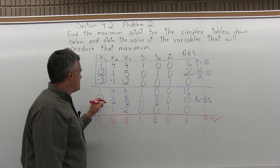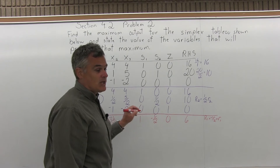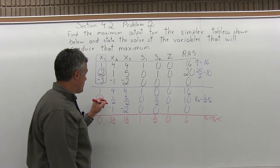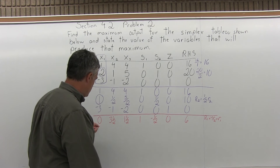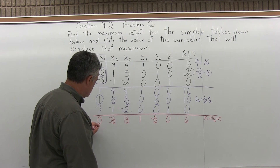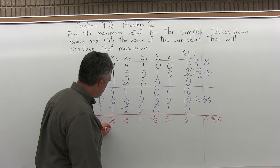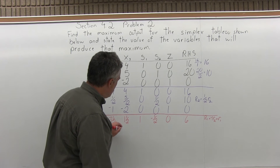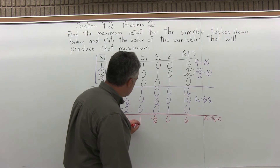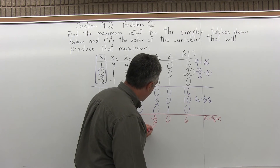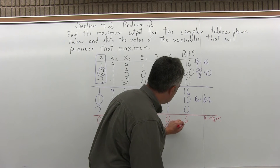The second row already has a 1 in the correct pivot position, so I leave the whole second row exactly as is and copy it into the next tableau: 1, 1/2, 5/2, 0, 1/2, 0, 10.